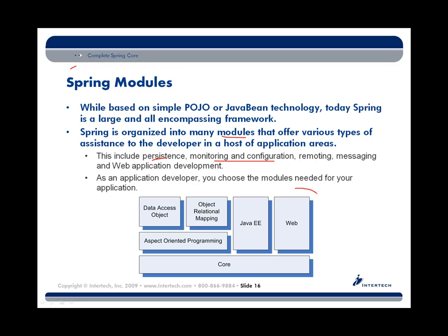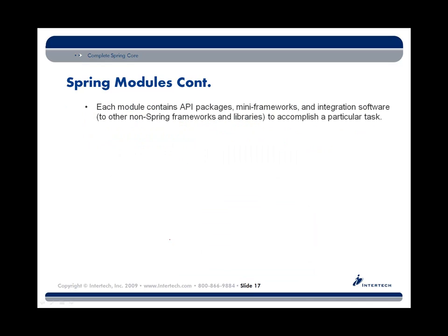This is an often-cited picture from Spring documentation showing the key modules. We've got the core module, the web module, data access objects, and the aspect-oriented programming module. Each module contains API — code we can use in our application — and in some cases mini-frameworks and integration software to dovetail into best-of-breed solutions for particular tasks.